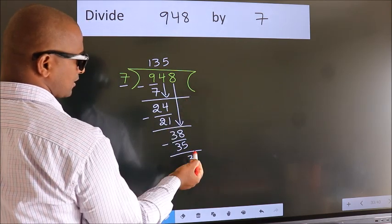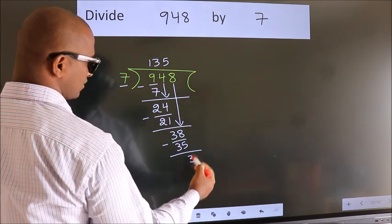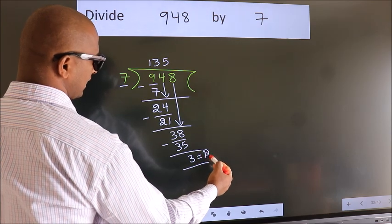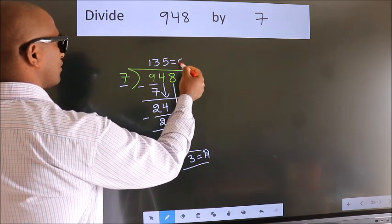No more numbers to bring it down. So, we stop here. This is our remainder. This is our quotient.